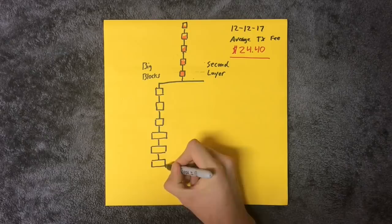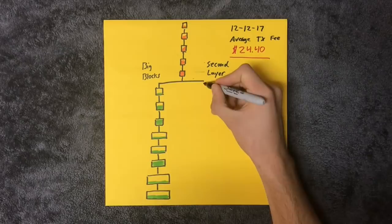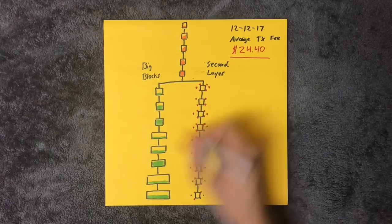Instead of raising the block size again, the development team has decided to go for a second layer called the Lightning Network. It promises instant transactions, super low fees, and this is the basics of how it works.